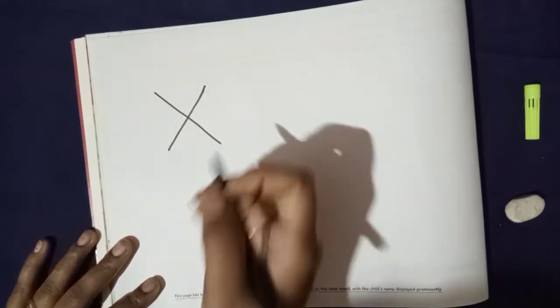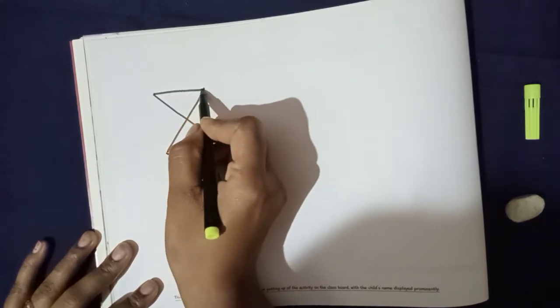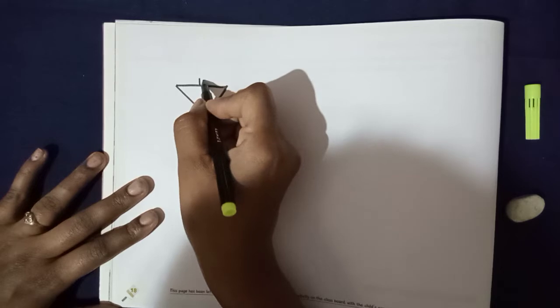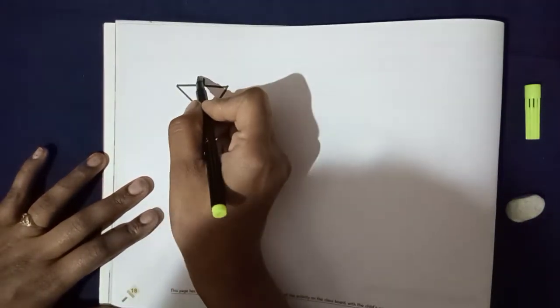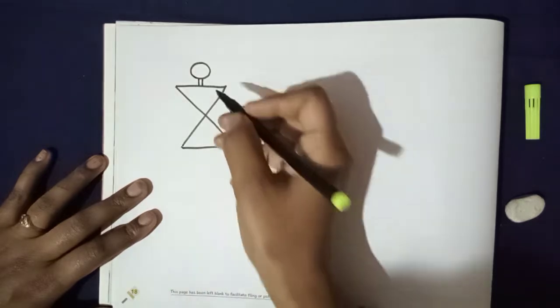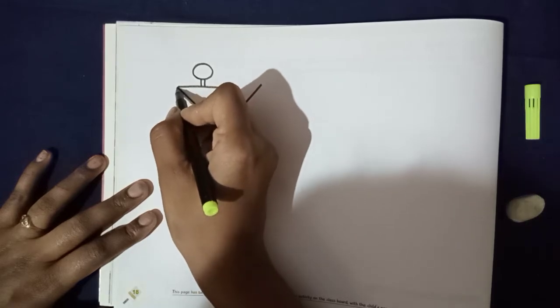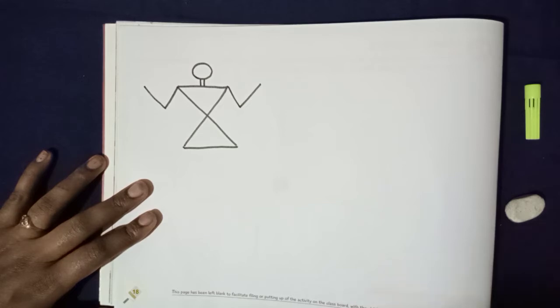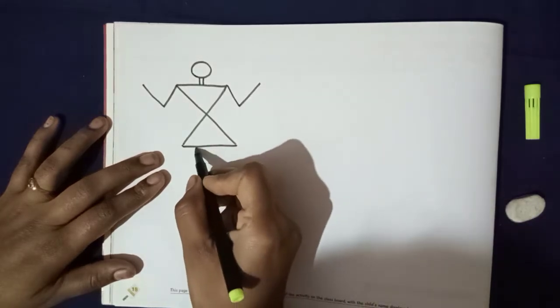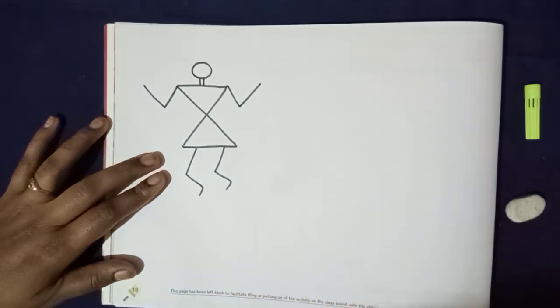Okay children. Now we will do sleeping line over here. Again, one more sleeping line. See children. Now we will draw two standing lines here and one circle. Now we will draw hands like V, V shapes you have to do. See children, these are hands. Now we will draw feet. These are the feet.